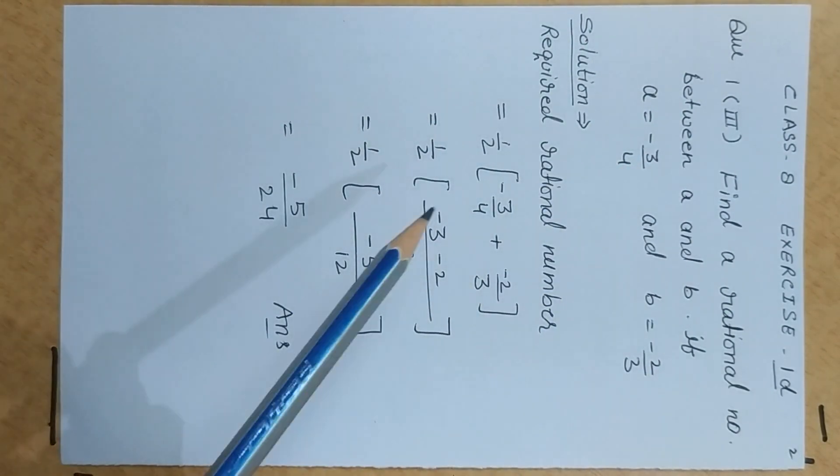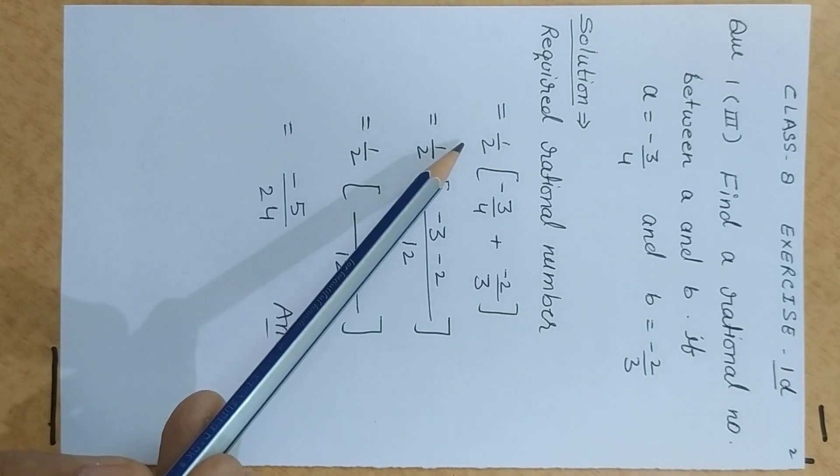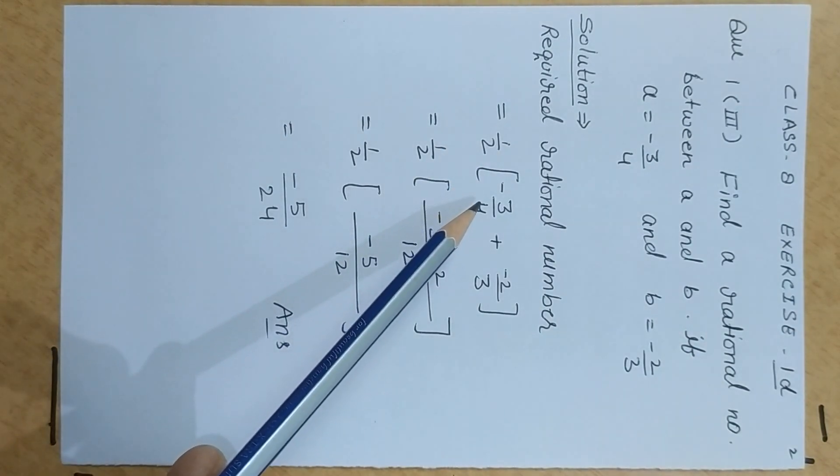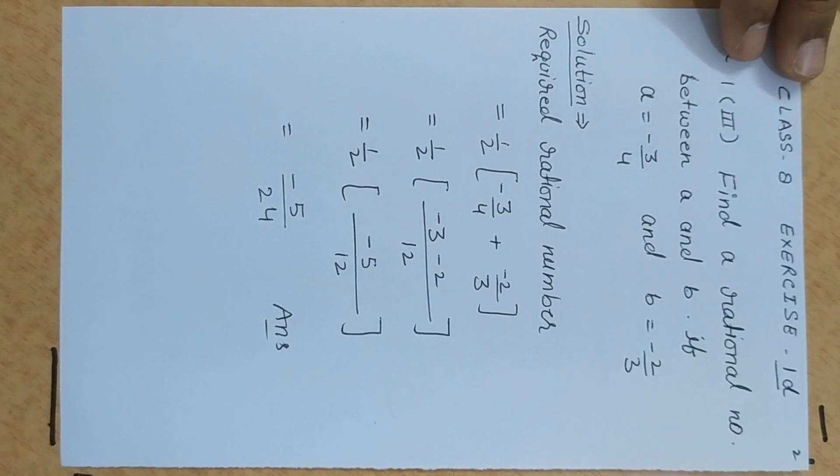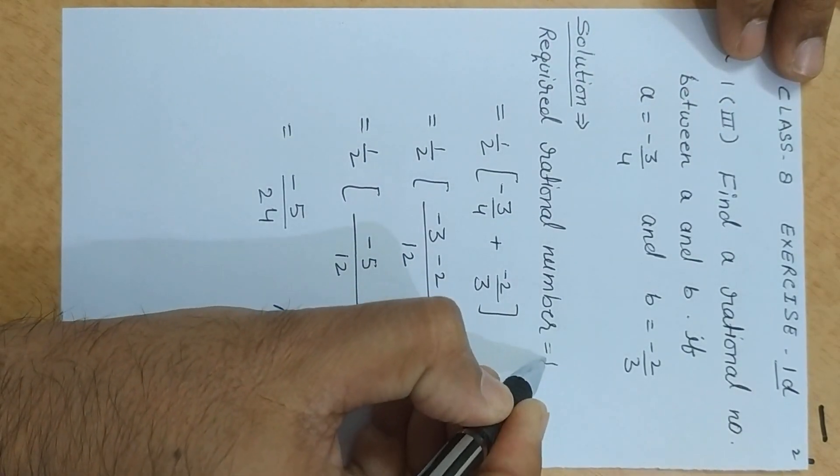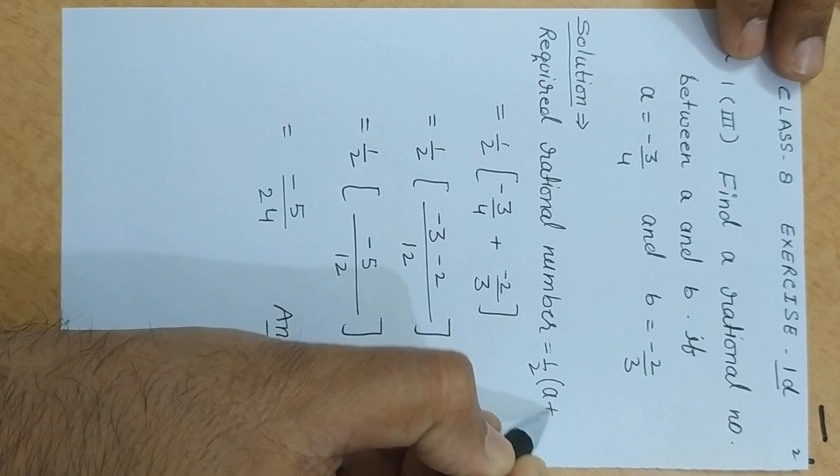To find a rational number, simply take half. 1 upon 2 sum of 1st term plus 2nd term. It is equal to 1 upon 2 times a plus b.